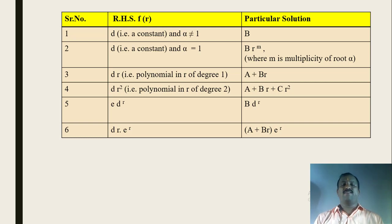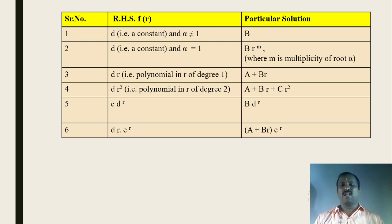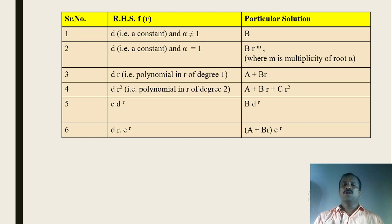Case 2: if the RHS is again a constant d but the characteristic root alpha equals 1 with multiplicity m, then the particular solution is capital B·rᵐ, where m is the multiplicity of root alpha = 1. Case 3: if the RHS is a polynomial in r of degree 1 — for example a + br, 3 + 5r, 6 + 8r — then the particular solution is directly capital A + B·r, where A and B are constants.